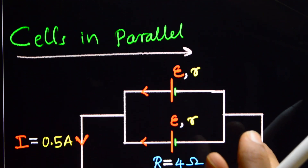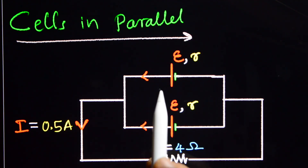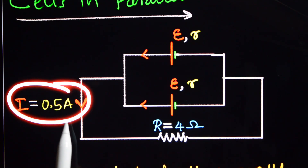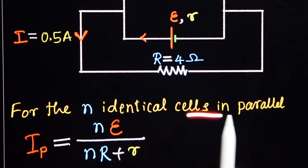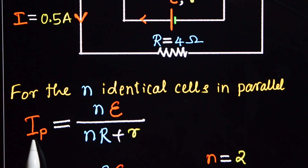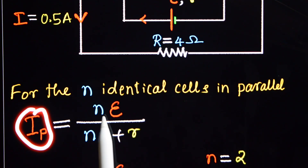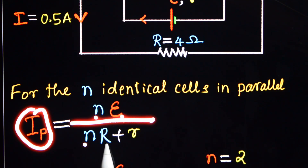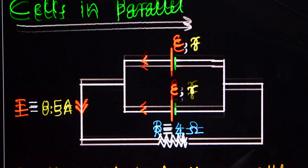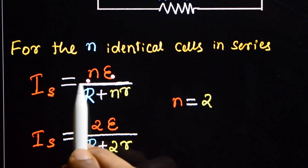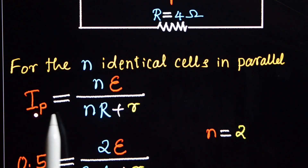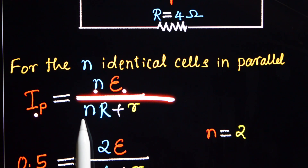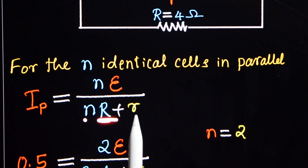Now the same cells are in parallel. When they are in parallel, they give the same current of 0.5 Ampere through the external resistor of resistance 4 ohm. When N identical cells are in parallel, the current through the external resistance formula is: I subscript P equals N into E divided by N into capital R plus small r. Note the difference from the series formula.